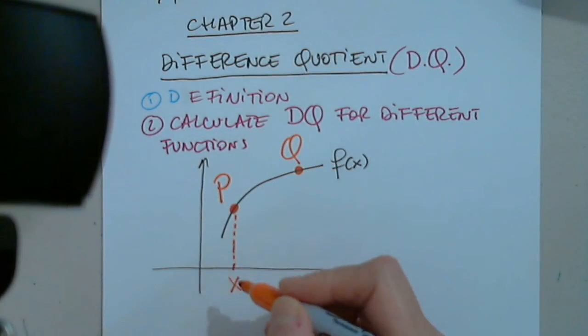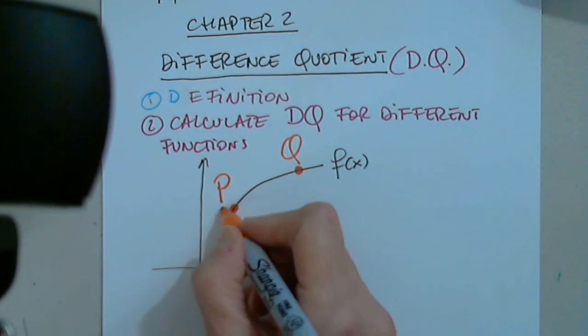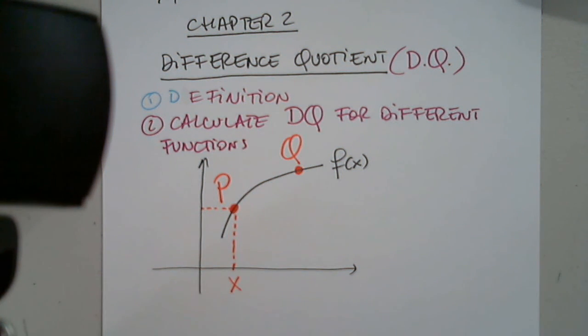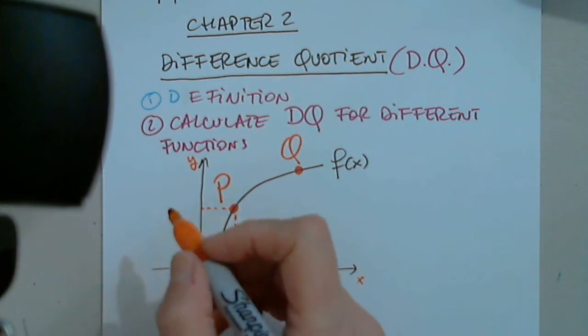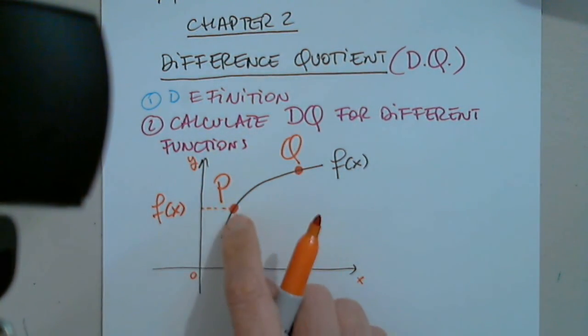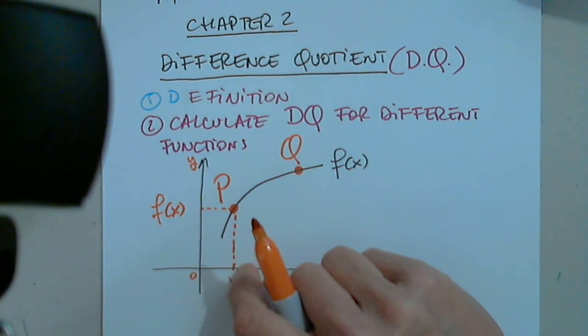Okay. So assuming that the x coordinate of P is x, can anyone give us the y coordinate? Anyone? F of x. Thank you very much. Who was that? Sean. Thank you. Indeed. It's the value of the function for this particular x.